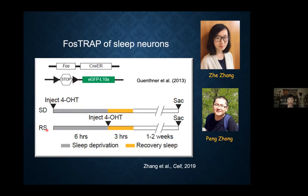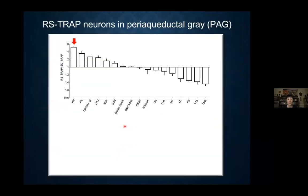In the sleep-deprived group, we sleep-deprive the mice for six hours and inject tamoxifen during the sleep deprivation, so that wake-active neurons turn on FOSS and express Cre-ER. Tamoxifen causes the Cre-ER to enter the nucleus and cause permanent labeling of the wake-active neurons. In the recovery sleep group, we first sleep-deprive them, then allow them to go to recovery sleep, and tamoxifen injection during this second period allows labeling of the sleep-active neurons.